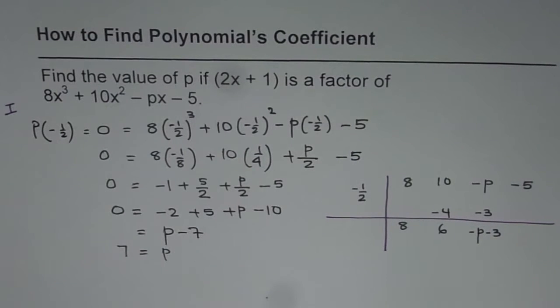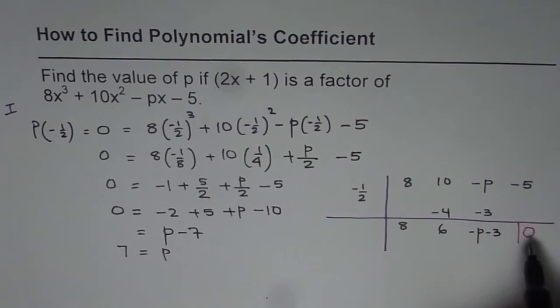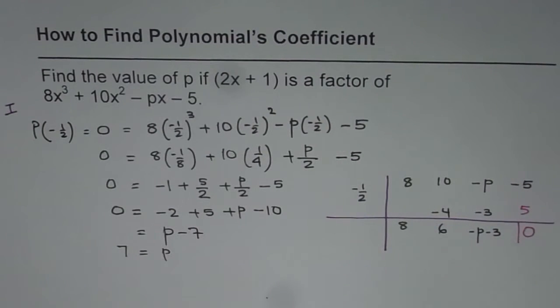Now, remember, you have to get remainder of 0. So here, remainder should be 0. How can you get 0? If I add 5 to minus 5, I get 0.